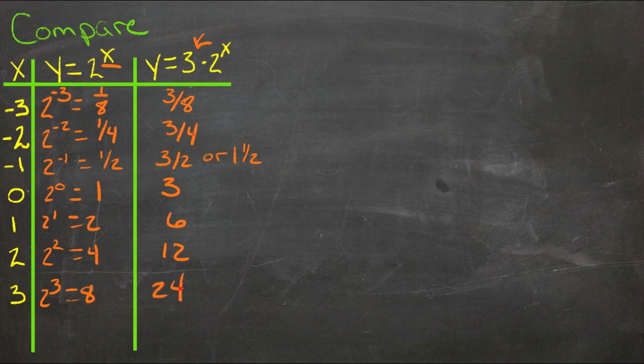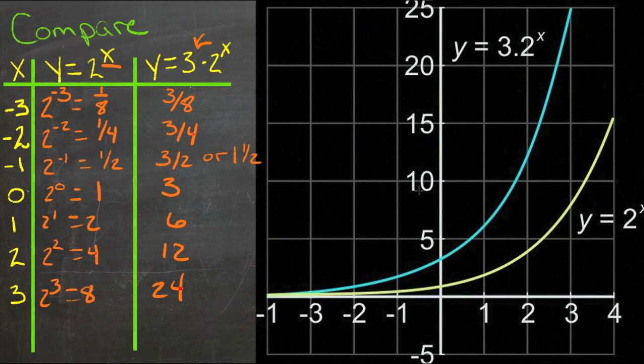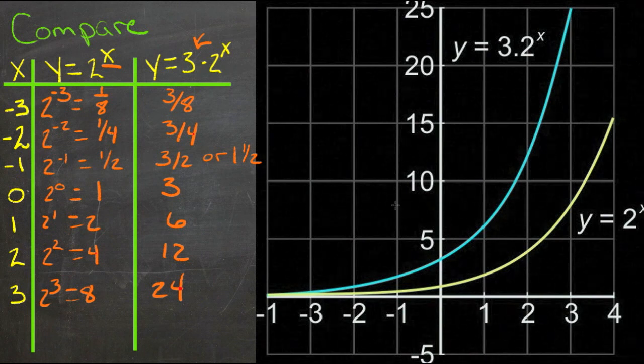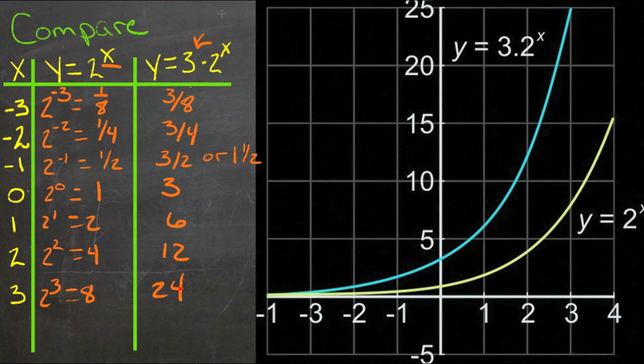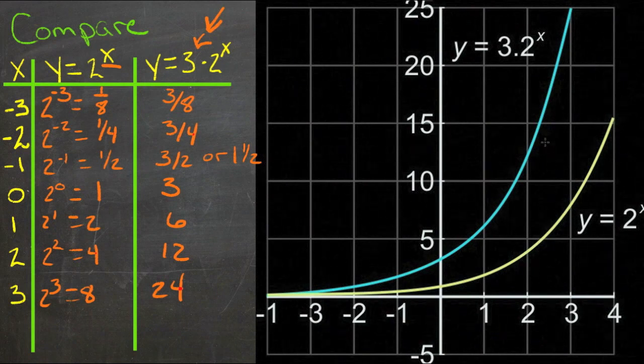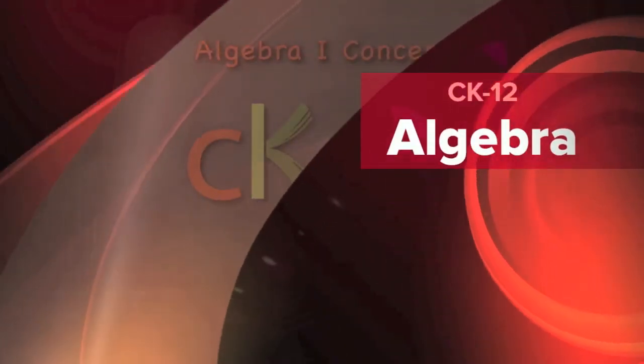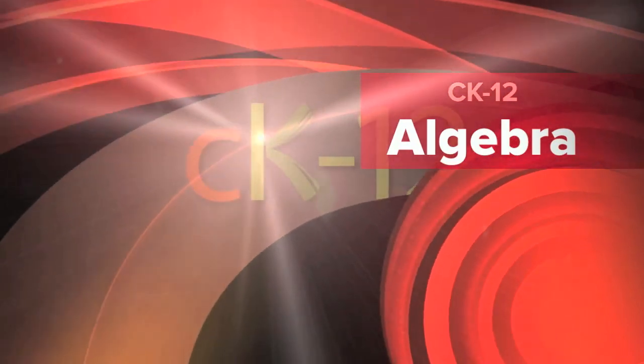So you can see that this column is going up quite a bit faster than this column. Although, as we get into really huge numbers, it wouldn't matter nearly so much. Let's take a look at the graphs here. You can see in our graphs of these two that the green line, which represents this function over here on the right, goes up quite a bit faster because every term in it has been multiplied by 3 over the same corresponding term in the other function, which is represented by the yellow line.